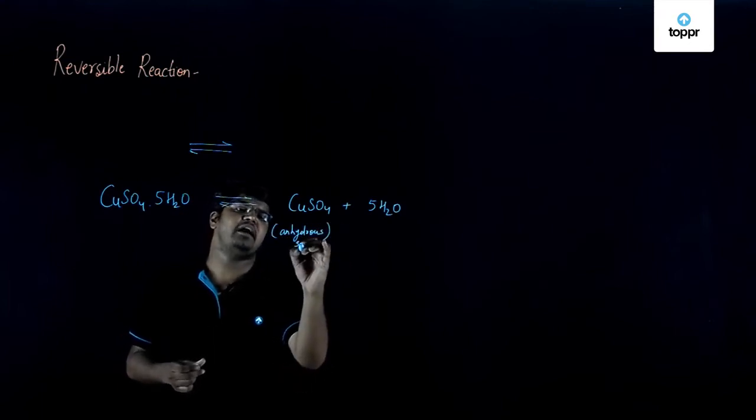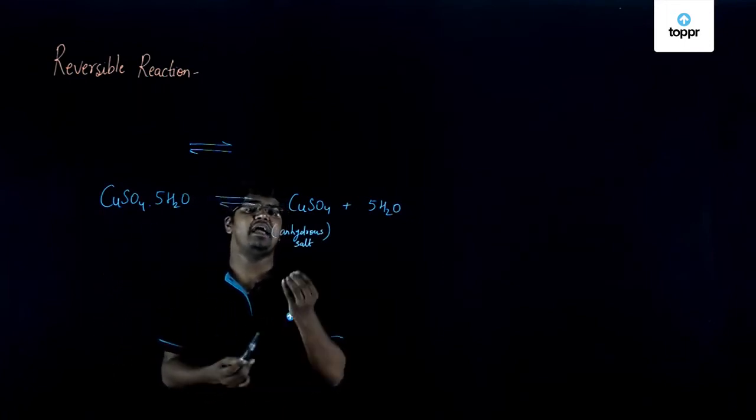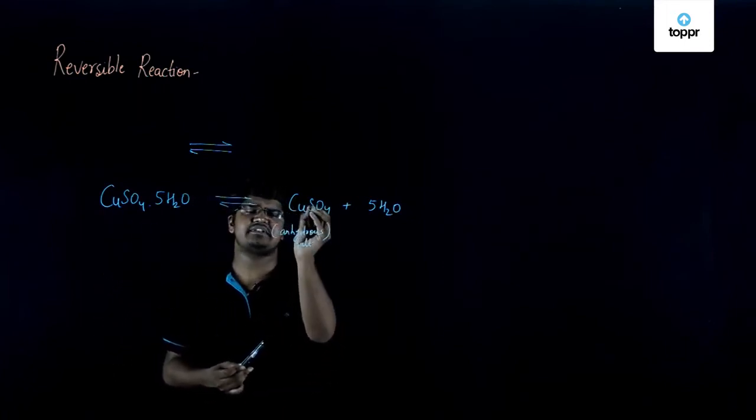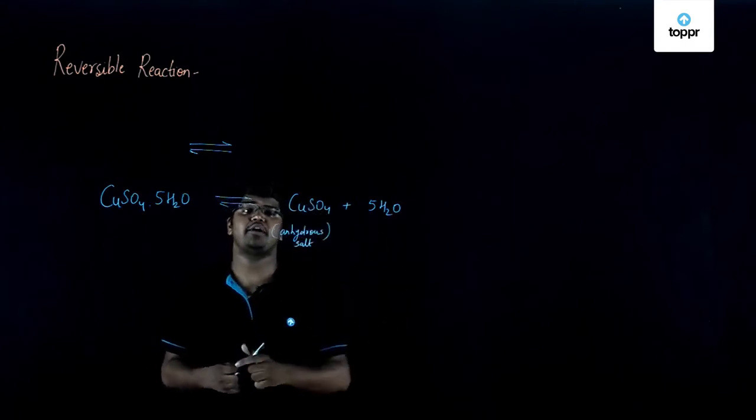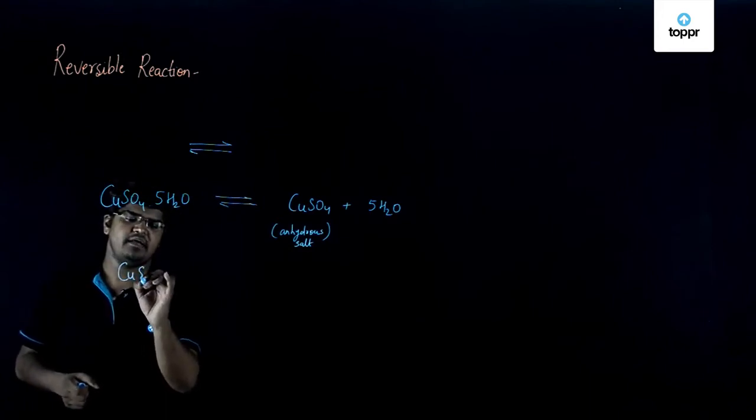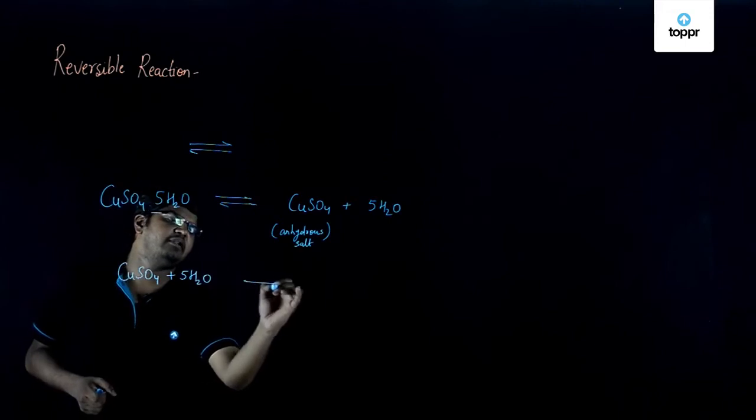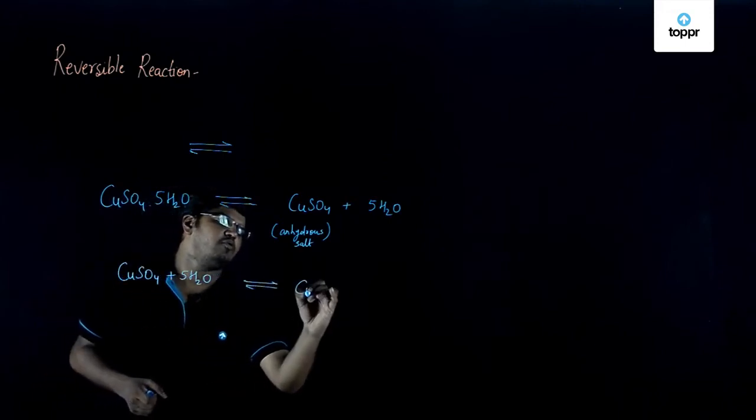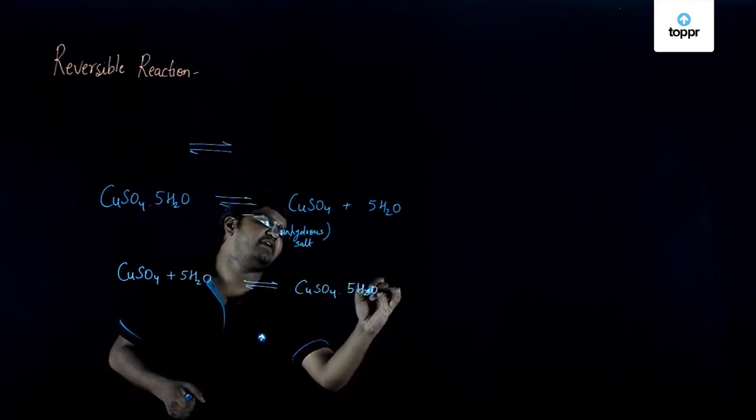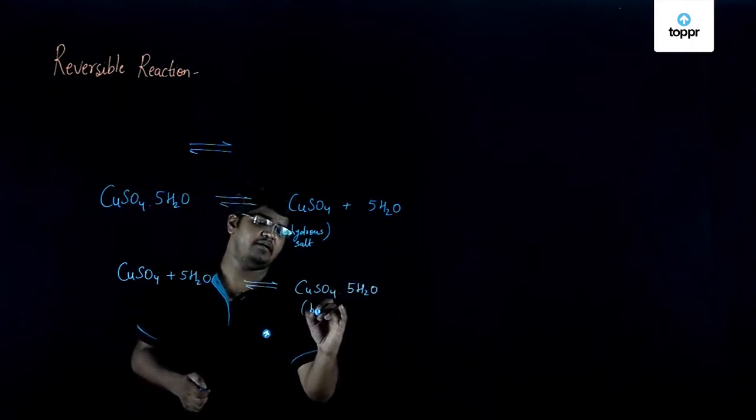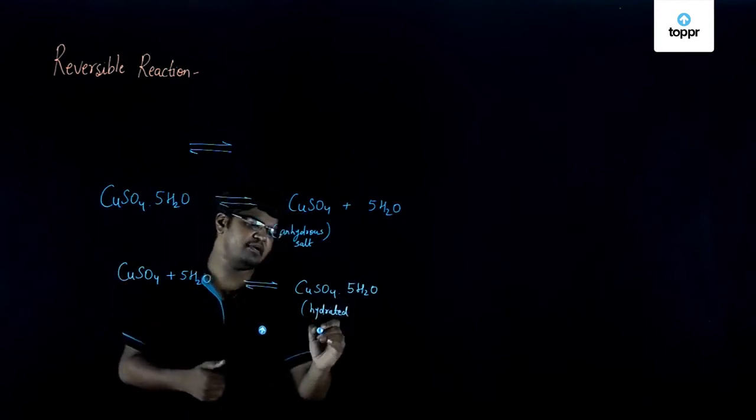But this anhydrous salt can again be converted to hydrated salt by taking a sample of anhydrous copper sulphate and adding water to it. If copper sulphate is made to react with water, it will give you the hydrated form of copper sulphate with 5 crystalline waters in it. So you can say that this reaction is a form of reversible reaction.